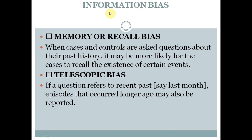The first type of information bias is memory or recall bias. We ask cases and controls the same questions about their past history. Cases are more likely to respond thoroughly because they actually have the disease, whereas controls, having no disease, have much less to say. This difference in responses creates memory or recall bias.